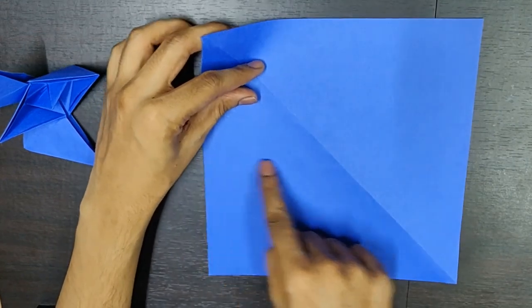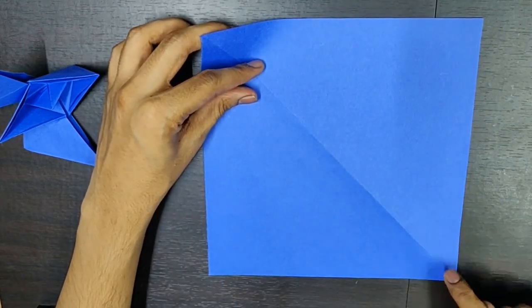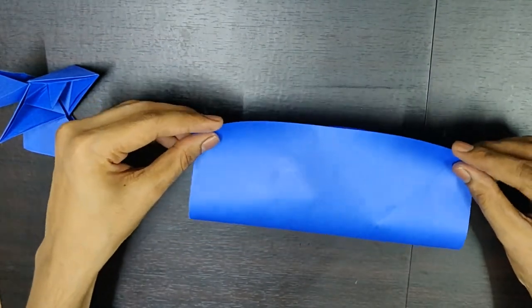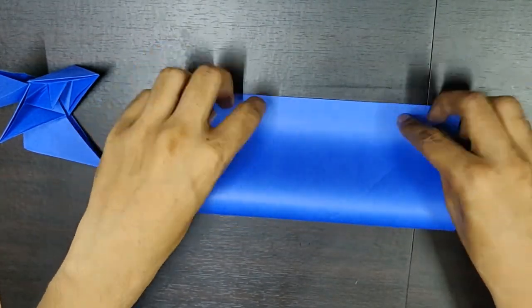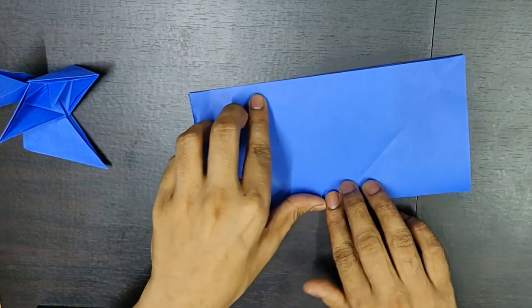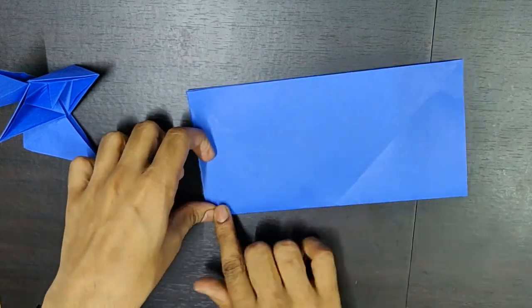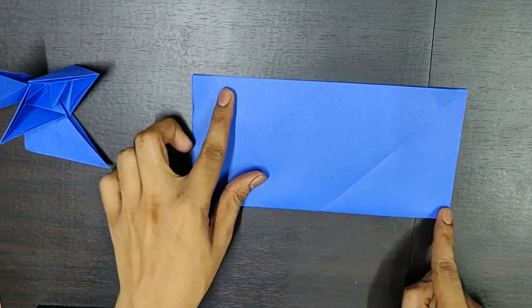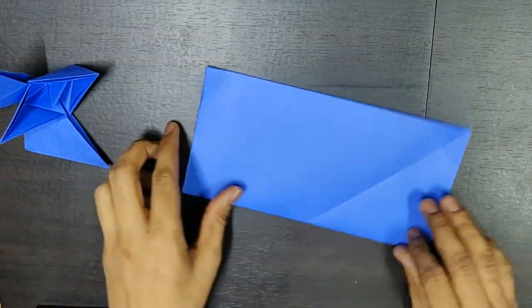So, first pick the horizontal axis and fold it from this corner to this corner. Like this. Form the rectangle. Similarly, now pick the vertical axis and fold it from this corner to this corner. It forms a square.